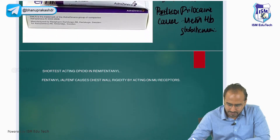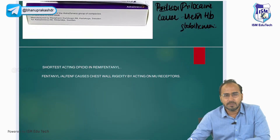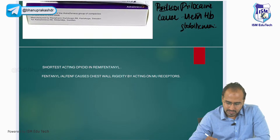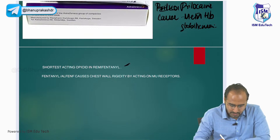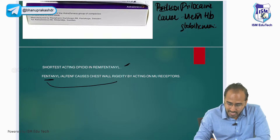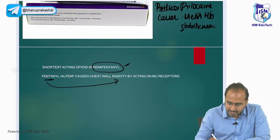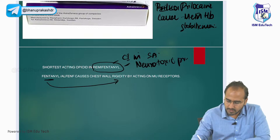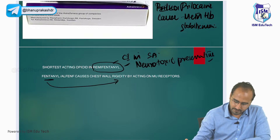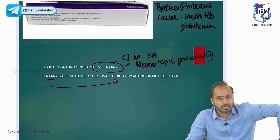We have discussed the double lumen tube and other tubes — these are miscellaneous topics in anesthesia. The last topic is opioids. All opioids can be used in anesthesia. The shortest acting opioid is remifentanil. Remifentanil is contraindicated in spinal anesthesia because it contains a neurotoxic preservative. Fentanyl can cause chest wall rigidity, also known as wooden chest syndrome.